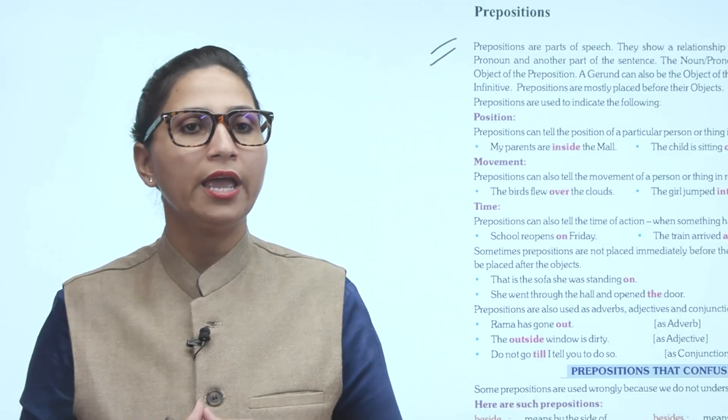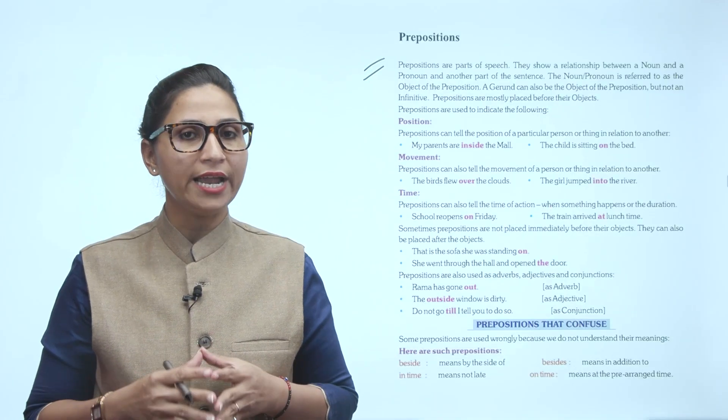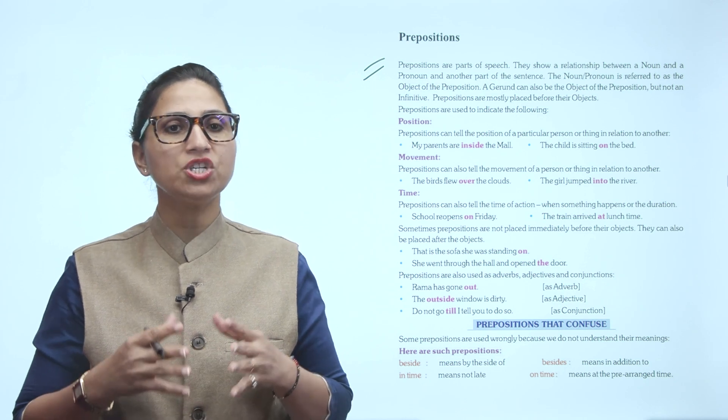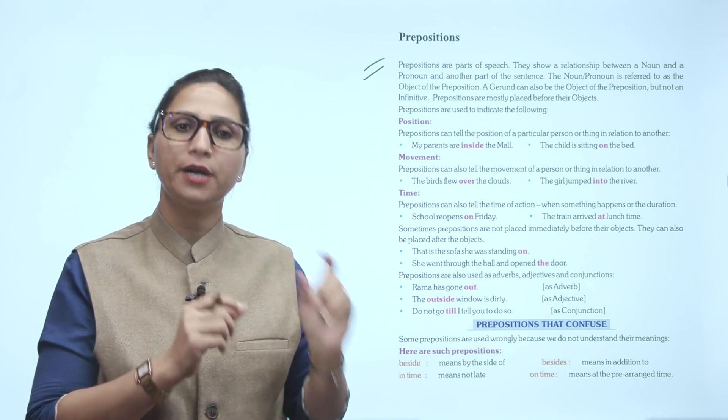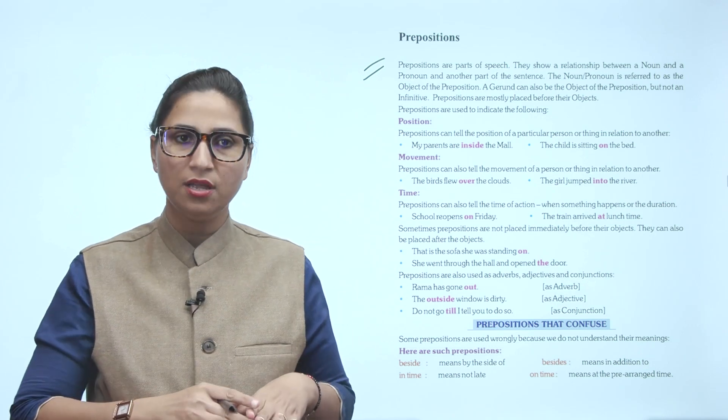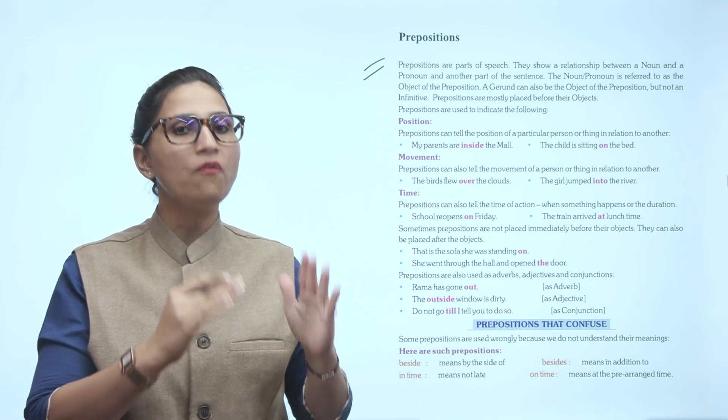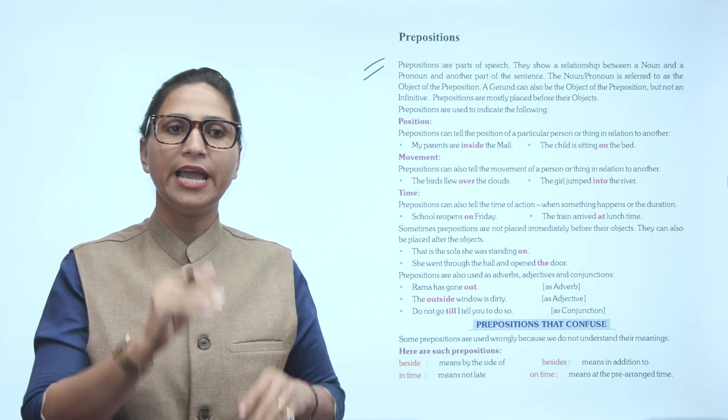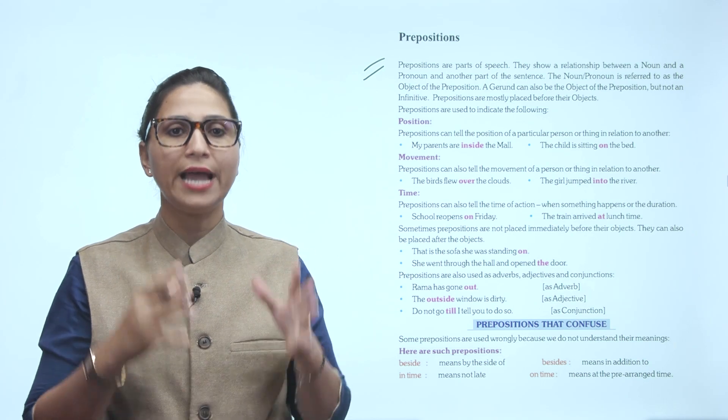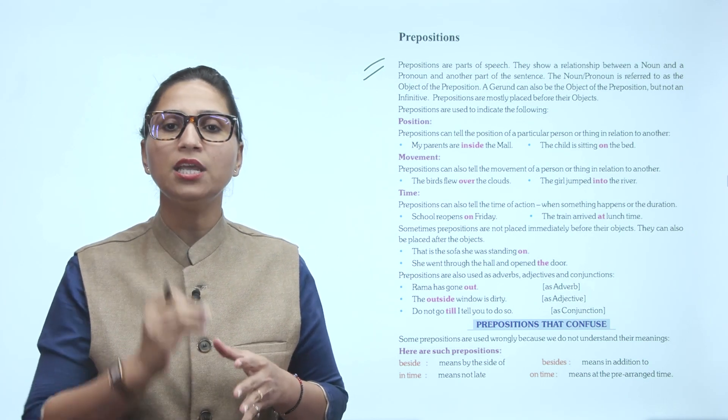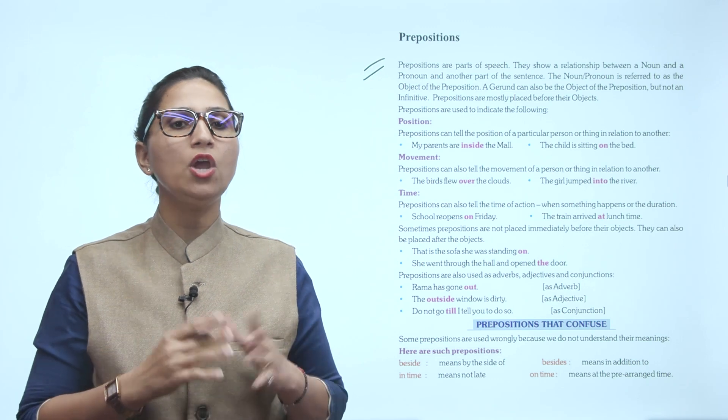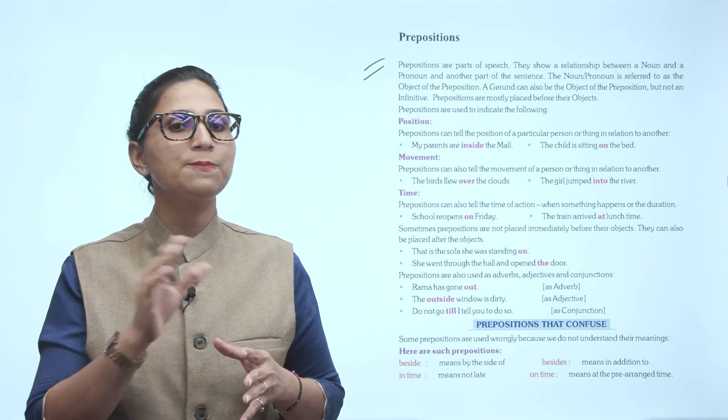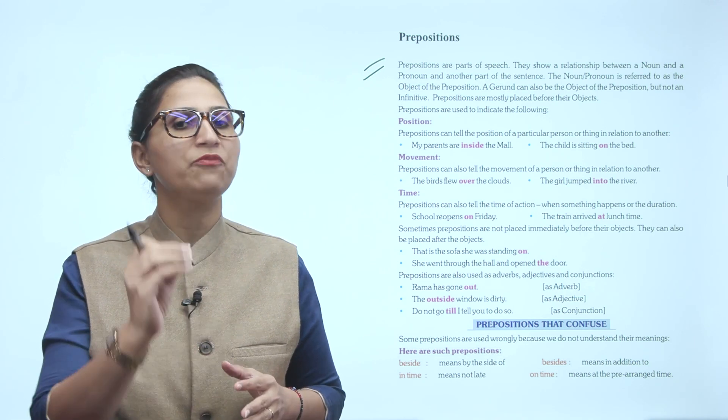Movement: they tell the movement of a person or thing in relation to other. The birds flew over the cloud. The girl jumped into the river. Time: prepositions can also tell the time of action when something happens or the duration. School reopens on Friday. The train arrived at lunch time. So it is specific for time means Friday, lunch time indicates the time.